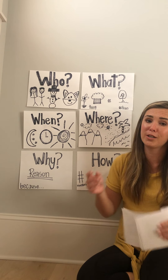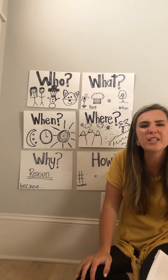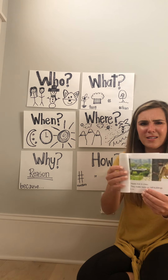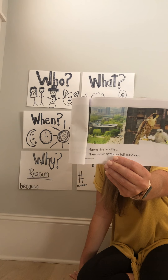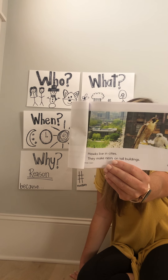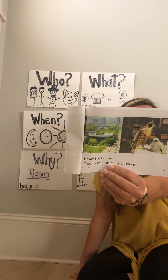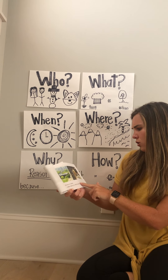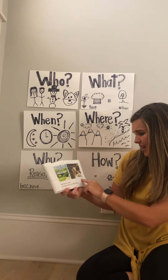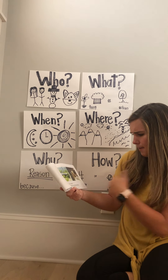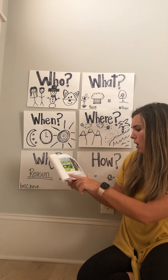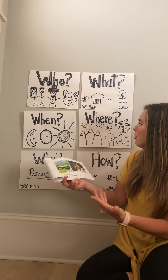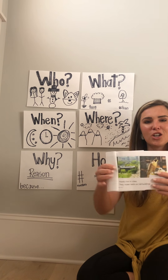My last question: we talked about squirrels making nests in trees, but where does the book tell us hawks make their nests? Looking back at this page, I see a hawk sitting outside — maybe on top of something. I see some buildings. Let's look at the words: hawks live in cities, they make nests on tall buildings. Hawks make nests on tall buildings.